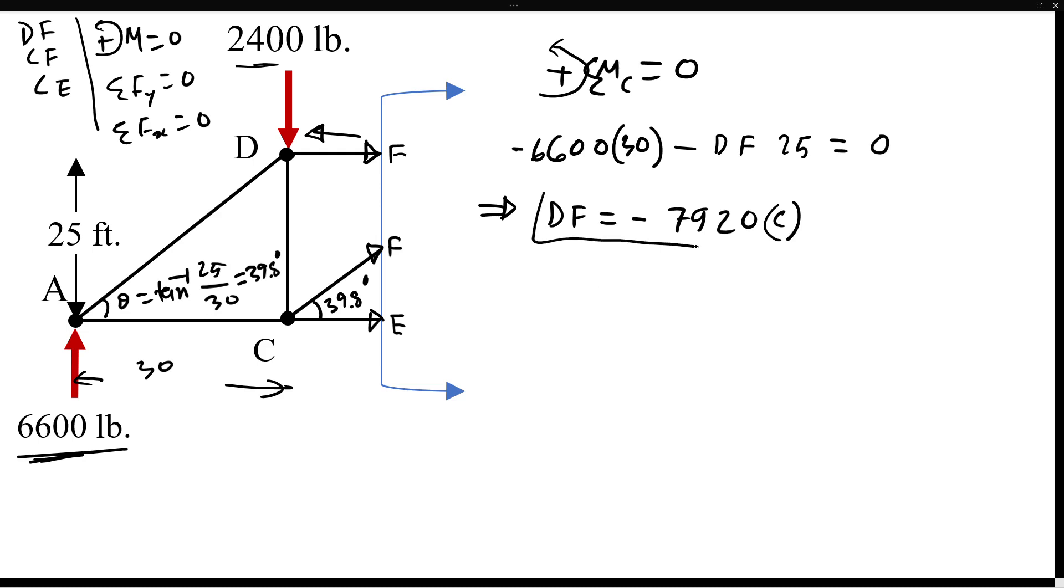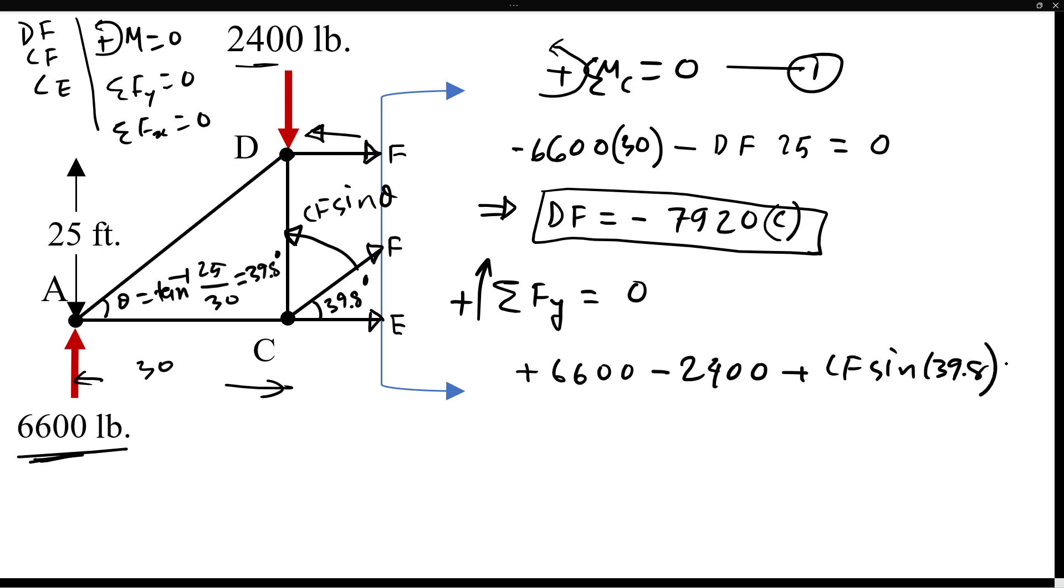We use one of our equations. Then we're going to use summation of Fy - doesn't matter which one you do first. All the upward forces positive. So then we have plus 6600 at point A, minus 2400 at D, then plus the component of C in Y direction, which is CF sine of that angle theta, so CF sine 39.8. Everything sums to zero, so then we'll be able to find out the CF.